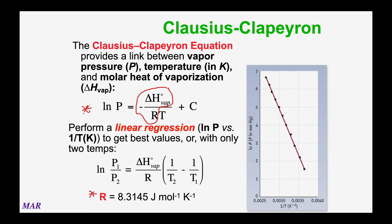You can also do a two-point version of the Clausius-Clapeyron equation if you only have two values. P1 and P2 are the vapor pressures, T1 and T2 are the Kelvin temperatures, and R is the gas constant. You solve for delta H vap using the natural log of P1 over P2 and the quantity one over T2 minus one over T1 — be careful of that sign. They flip the pressures or temperatures to eliminate the negative sign from the full equation. This is literally how delta H vaporization values are determined.